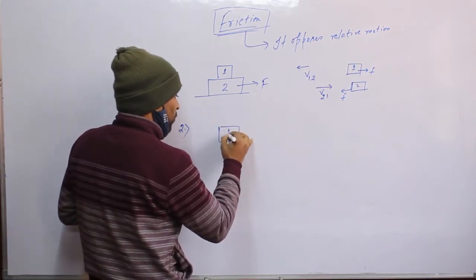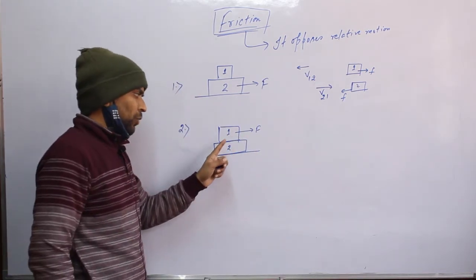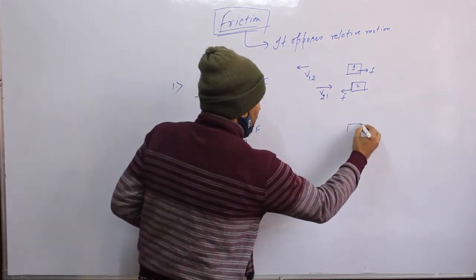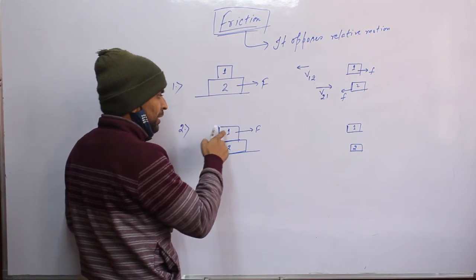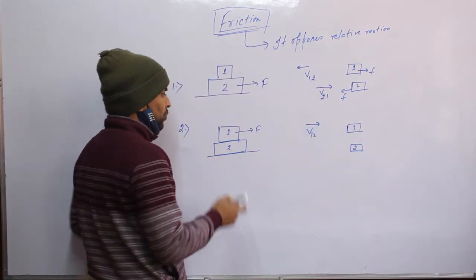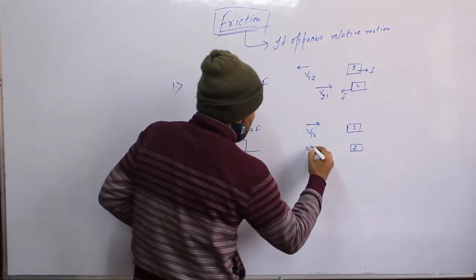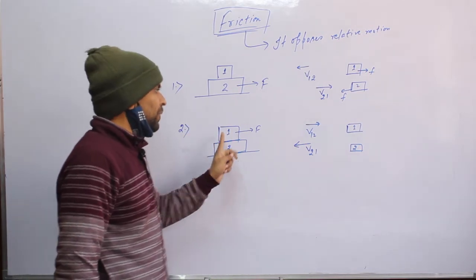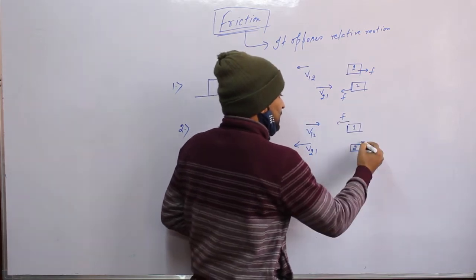Suppose एक और scenario है — एक object यहाँ पे है, यह है 1 और नीचे हमारा 2 है। Force मैंने 1 पे लगाया है। Surface यदि frictionless होगी, तो 1 की velocity 2 के respect में आगे की तरफ होगी। Velocity of 1 with respect to 2 इधर, और velocity of 2 with respect to 1 पीछे की तरफ होगी। तो 1 पे frictional force इधर लगेगा और 2 पे frictional force उस direction में लगेगा जो उसकी relative motion tendency को oppose करे।